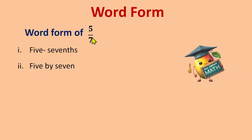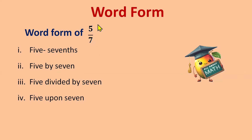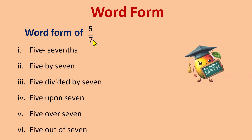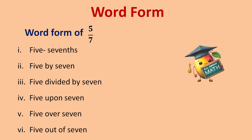The second way: five by seven. This time you don't write 'ths', just 'five by seven', or we can read it as 'five divided by seven'. The next way is 'five upon seven', then 'five over seven', and 'five out of seven' — meaning seven is the total and out of seven we have five. So these are six ways to write the word form of a fraction. You can choose any one of them in an exam and it will be correct.